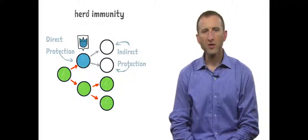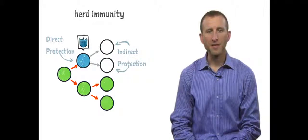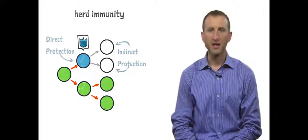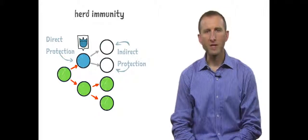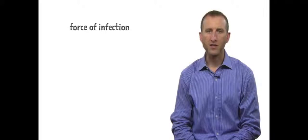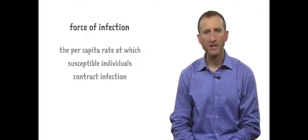However, the change in the rate of transmission and distribution of infection within the population as a consequence of vaccination can have a variety of impacts, not all of which are immediately intuitive. One important consequence of vaccination and herd immunity is that the overall force of infection, the per capita rate at which susceptible individuals contract infection, declines in the population.